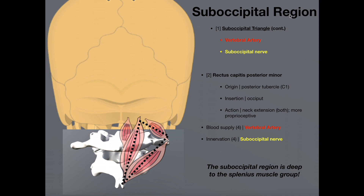The final component of the suboccipital region is this muscle right here, the rectus capitis posterior minor. I'm treating this separately because it's not actually part of the suboccipital triangle, although it shares the same blood supply and nervous supply as the other three. If we look at the rectus capitis posterior minor, we can see its origin down here. Recall that the atlas does not actually have a spinous process — it has a posterior tubercle. The origin of this muscle is just lateral to the posterior tubercle of C1, sometimes described as the posterior arch.